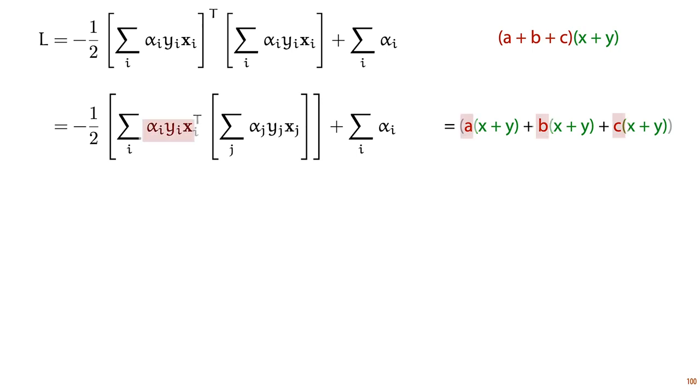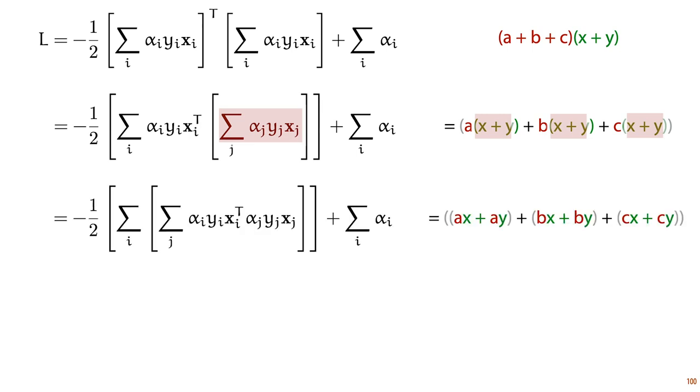Then for each of these terms in the outer sum—a, b, and c on the right—we move them into the inner sum, x plus y, which looks like this. Now at this point, we have two nested sums where all the terms are a simple dot product on the left or simple multiplication on the right, so we can remove the brackets.